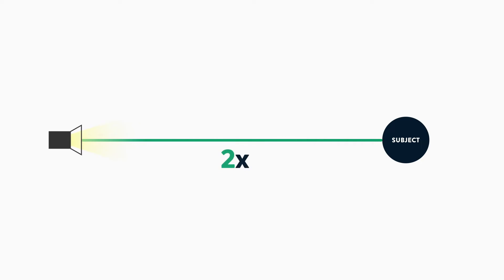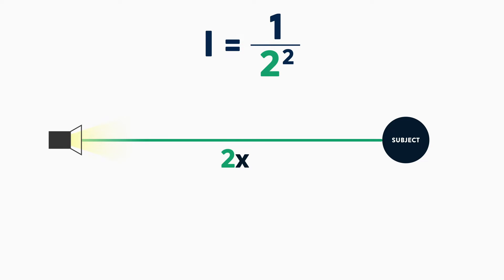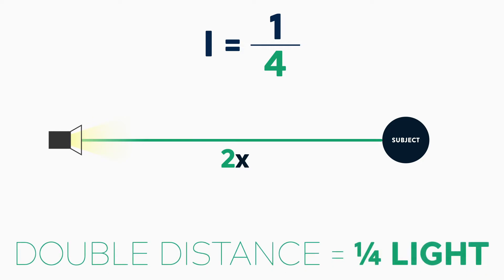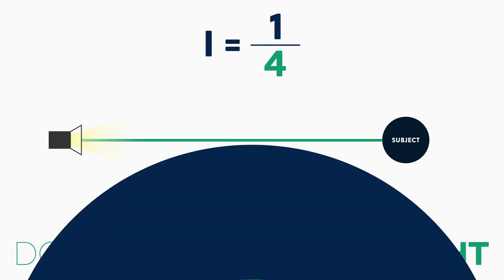Let's assume that we want to double the distance of a light source that's one meter away, so we want to take it to two meters away. Because we're doubling the distance, d equals 2. So our equation is 1 over 2 squared, or 1 quarter. So doubling the distance, we get one quarter the amount of light.